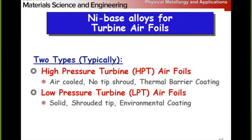There are two types. The high-pressure turbine blades are typically the smaller blades — I'll bring one in on Wednesday to show you. They're air-cooled, they don't have a tip shroud on them, and they have a thermal barrier coating. This is all because the operating temperature for civilian engines is pretty close to the melting temperature of the nickel blade. For military engines, they can be prime reliant on the thermal barrier coatings and actually have the operating temperature be slightly higher than the melting temperature of the blade.